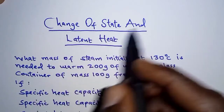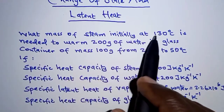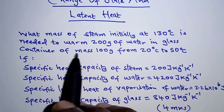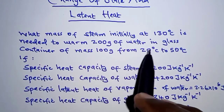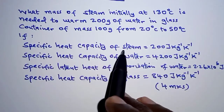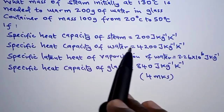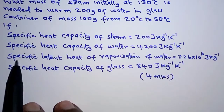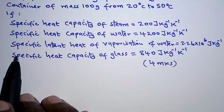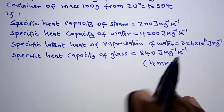The question today is about change of state and latent heat. What mass of steam, initially at 130 degrees Celsius, is needed to warm 200 grams of water in a glass container of mass 100 grams from 20 degrees Celsius to 50 degrees Celsius? The specific heat capacity of steam is 2000 joules per kilogram per Kelvin, of water is 4200 J/kg/K, the specific latent heat of vaporization of water is 2.26×10⁶ J/kg, and the specific heat capacity of glass is 840 J/kg/K.